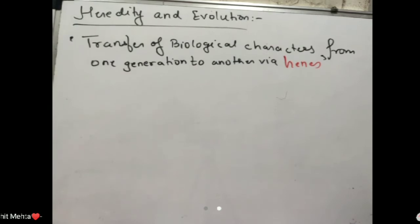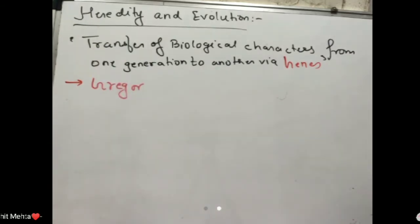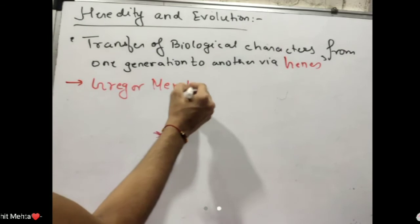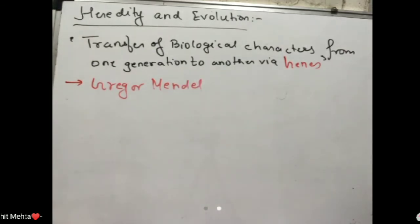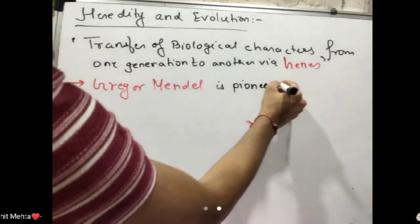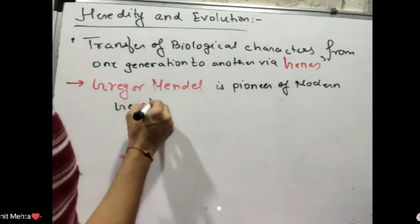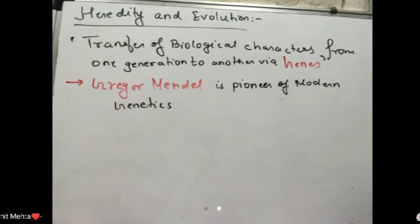Certain information given on page number 1 of the textbook is very important. Gregor Mendel is the pioneer of modern genetics. Pioneer means he originated it. Earlier people considered him odd, but he was basically a statistician, a mathematician, and also a monk.